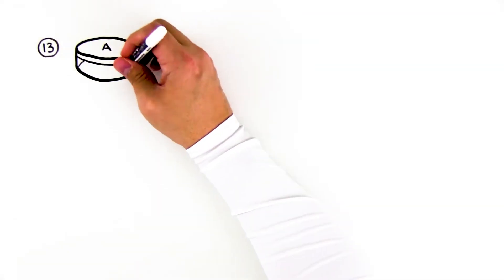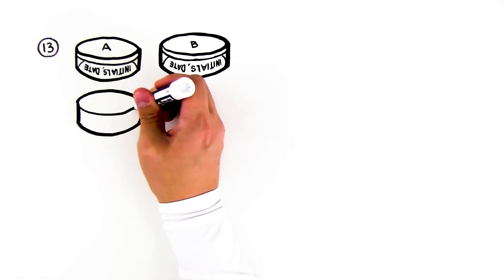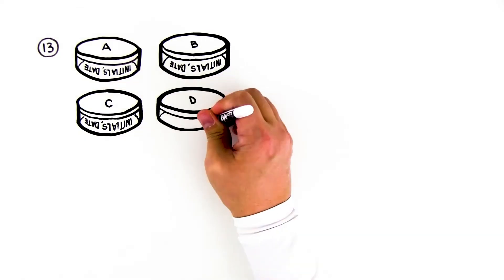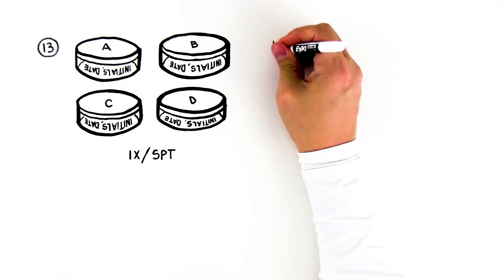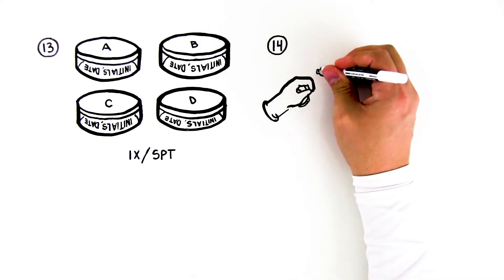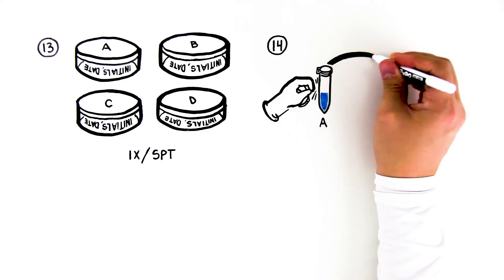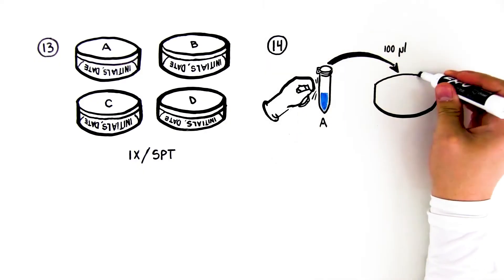Step 13: Near the edges, label the bottoms of four IX SPT plates A through D. Add your initials and date. Step 14: Gently flick tube A to re-suspend the bacteria. Using a new pipette tip, transfer 100 microliters of sample A onto plate A.